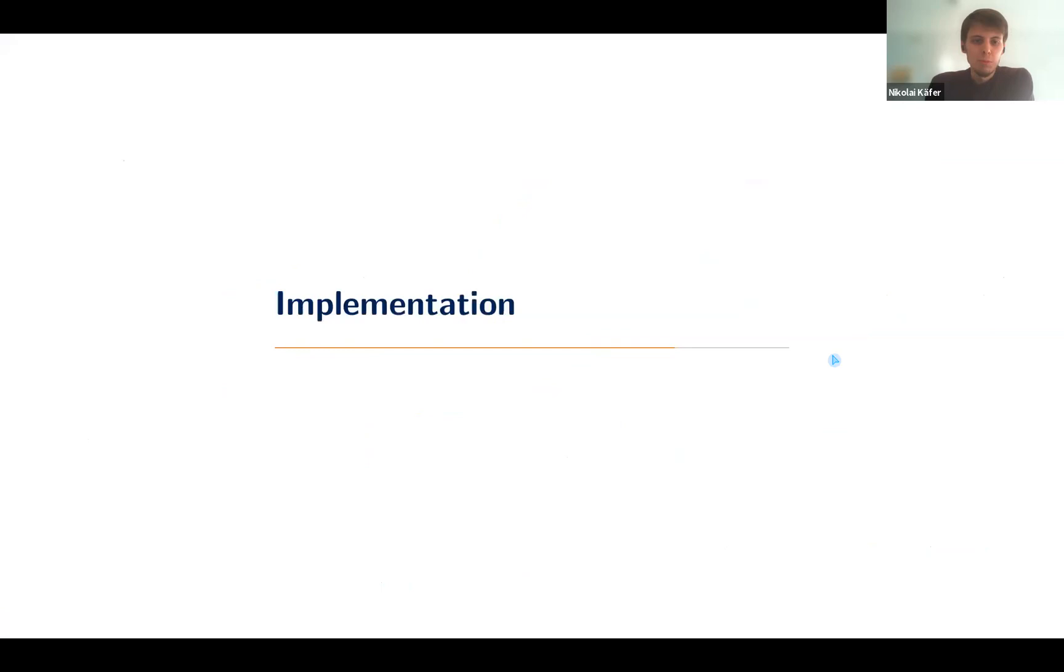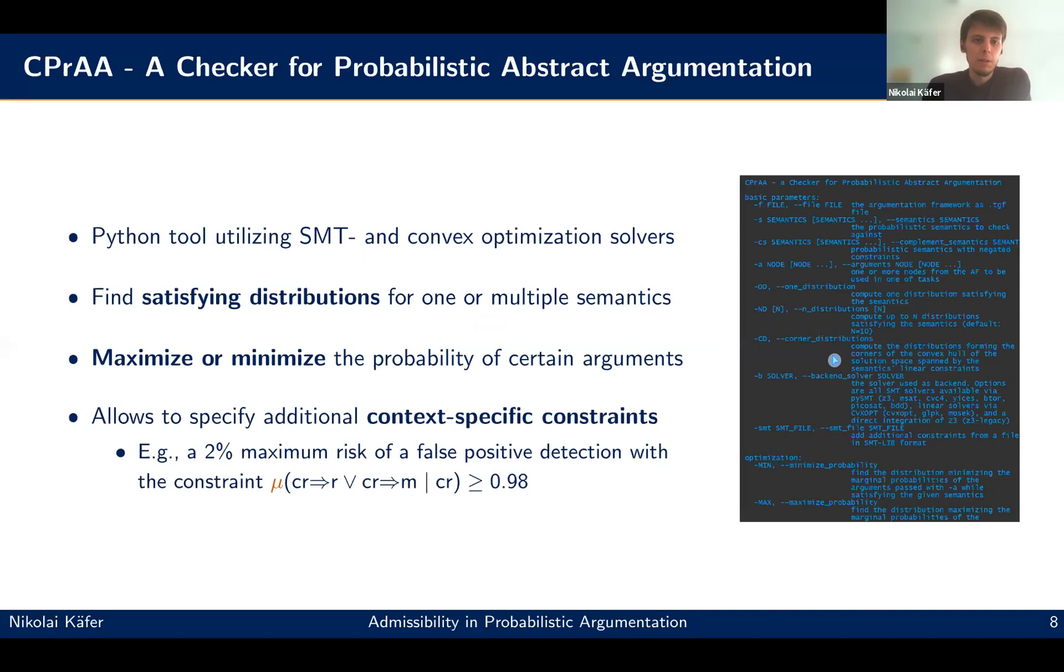Okay. There's one more thing which we also provide, namely a proof of concept implementation. So we have developed a tool called CPrAA. [moderator: If you want to know questions, you should finish.] Yeah, I'm almost done. Thanks. So it's a tool which basically allows you to play around with all the semantics. Also the other semantics which you saw, you can find satisfying distributions for one or multiple semantics, also maximize or minimize probabilities of arguments. And you can specify, for example, context specific constraints